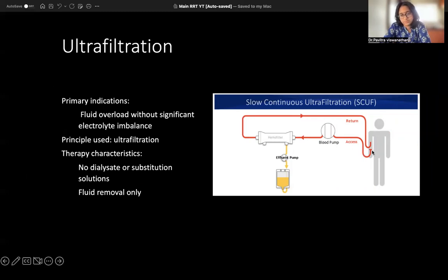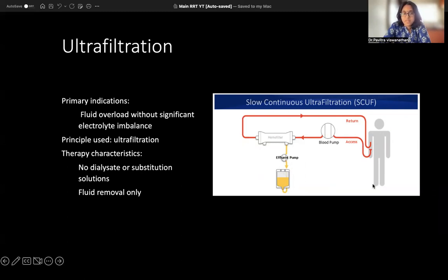For an ultrafiltration filter setup — using an arteriovenous-type attachment — the principle remains the same: blood comes out of the patient, goes into the filter, whatever extra fluid you have set to be removed goes out into the effluent bag (the yellow bag), and the rest of the blood returns to the patient. This is ultrafiltration — removal of just fluid. The modality is called Slow Continuous Ultrafiltration (SCUF).